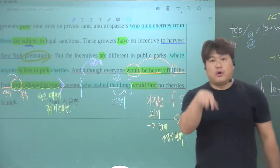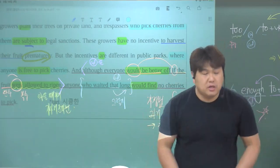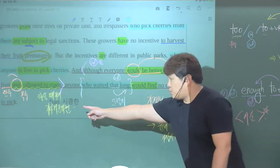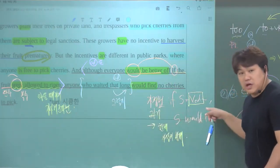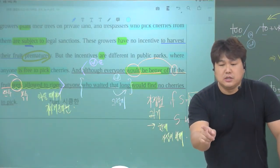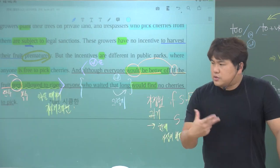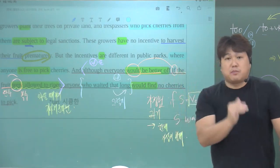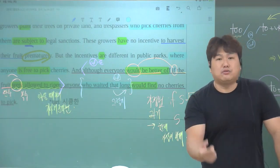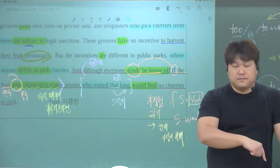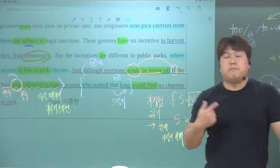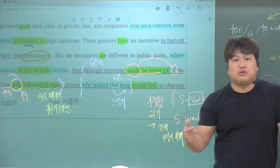같이 한번 외워볼게요. 'although'가 나왔고요. 모든 사람이 행복할 거라 그랬어요. 'everyone would be better off.' 그 다음에 가정법 나온다 그랬잖아. 'if' - 만약 과일이, 'the fruit'이. 시제를 과거로 쓴다 그랬고, 과일은 단수지만 동사는 복수 쓴다 그랬잖아. 'were.' 근데 지가 허락해? No, no. 허락되어지죠. 'allowed to ripen.' 익도록 허락되어진다면이죠. 그래서 'although everyone would be better off, if the fruit were allowed to ripen.' 누구라도 'anyone', 그 다음에 관계대명사로 'waited', 부사 'that', 형용사 'long.' 그렇게 오랫동안 기다렸던 사람은 아마 발견하지 못할 거야. 'would find no cherries to pick'이 되시는 거죠.